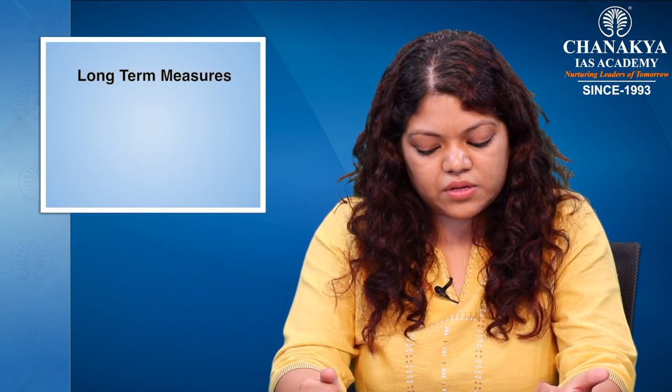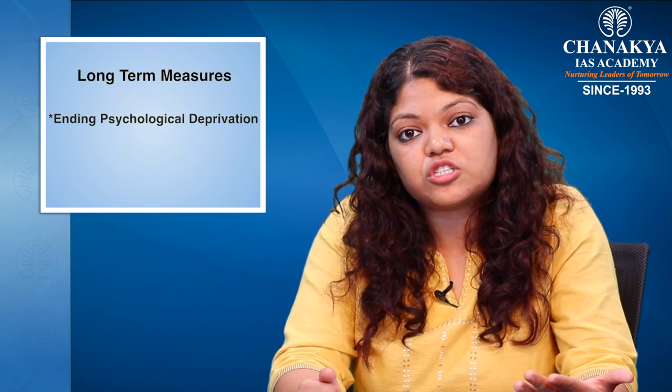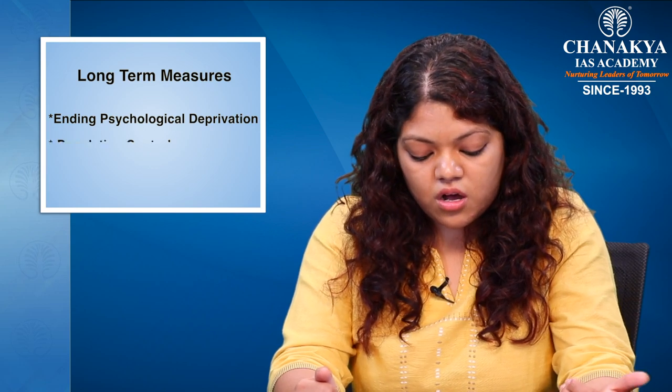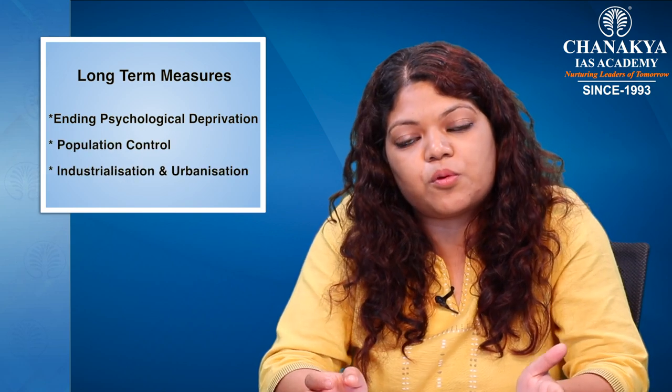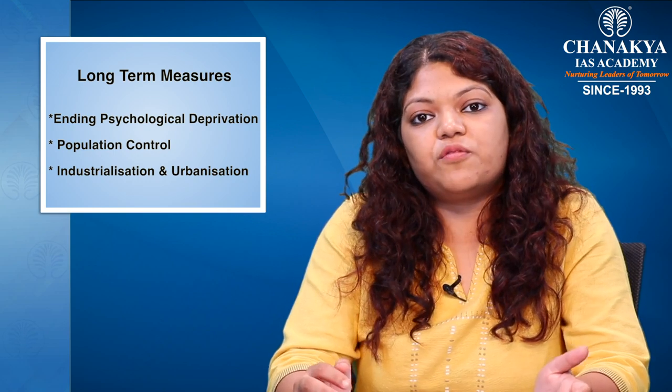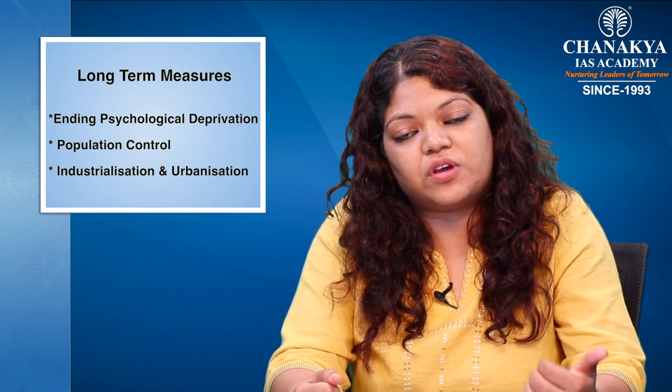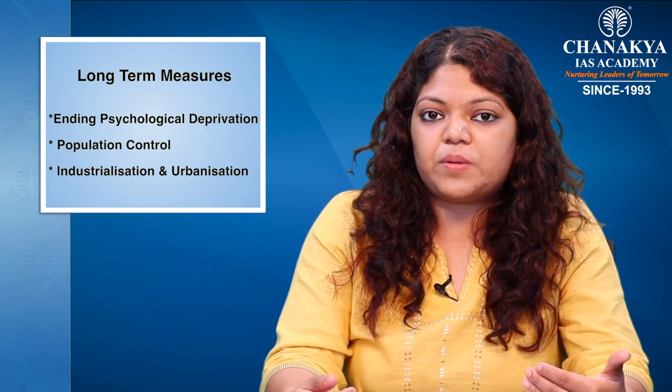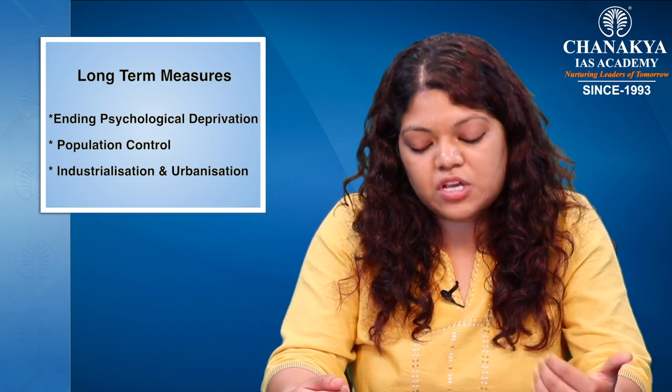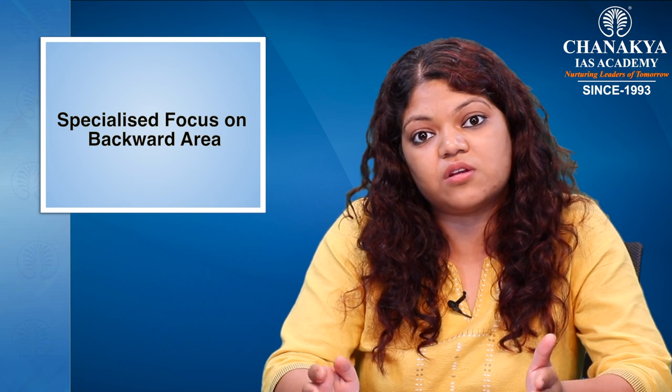Long-term measures to curb poverty include ending psychological deprivation and population control. Industrialization and urbanization must be promoted in a planned manner so that, without harming people, wages and incomes can be improved and education provided. There needs to be specialized focus on backward areas — the Aspirational Districts Programme is very relevant here as it focuses on the 200 most backward districts in India, giving them targeted attention to combat poverty in a focused manner.